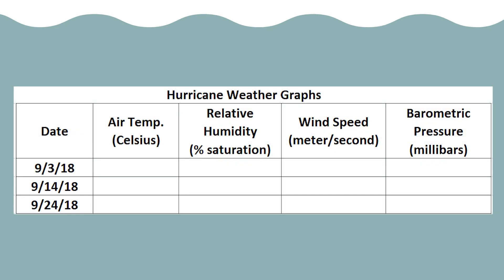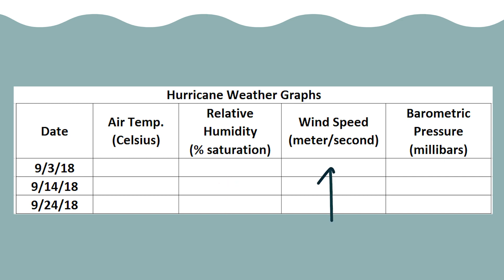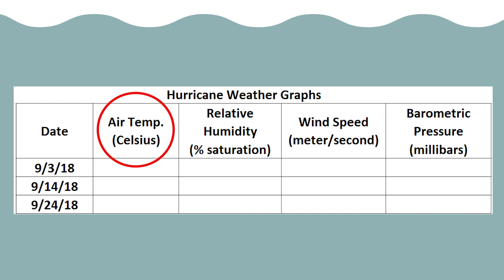Start by making a table with columns for the date, temperature in Celsius, relative humidity, wind speed, and barometric pressure. In the previous activity we used Fahrenheit, but these graphs are in Celsius, so that's what we'll use. Fahrenheit and Celsius are just two different ways to express temperature.